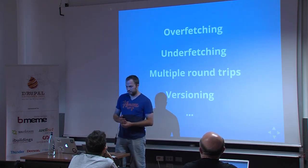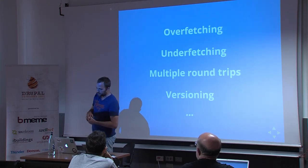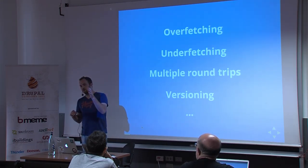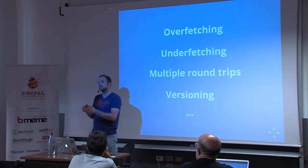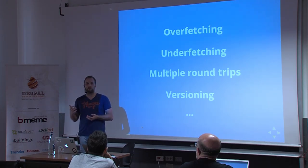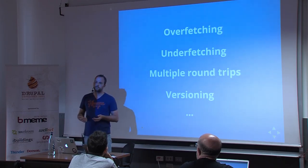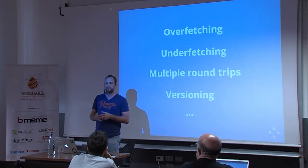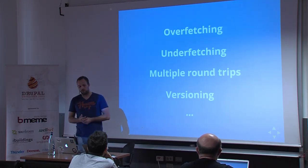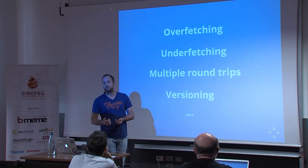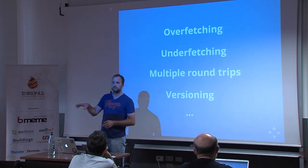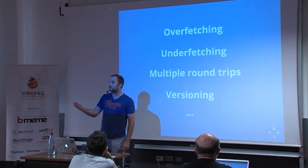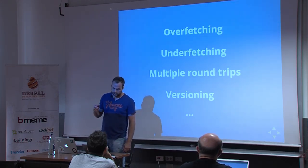Multiple round trips: you might have seen Angular applications where you call REST resources for reference data. The first request to the server returns all the information about articles you want to list, but there are only references to authors inside — no name, no email address. So you have to do another round trip to the server to get that information, which makes the application stutter as it renders and information drips into the client-side code.